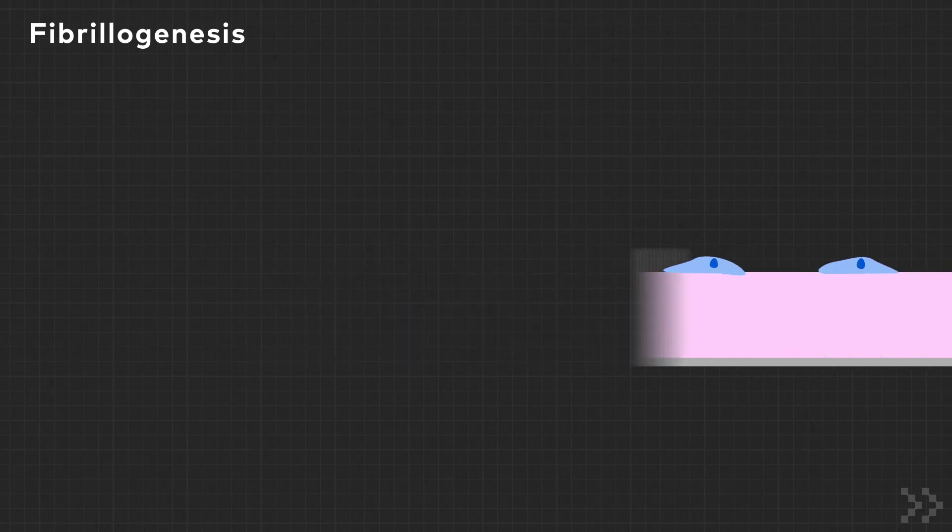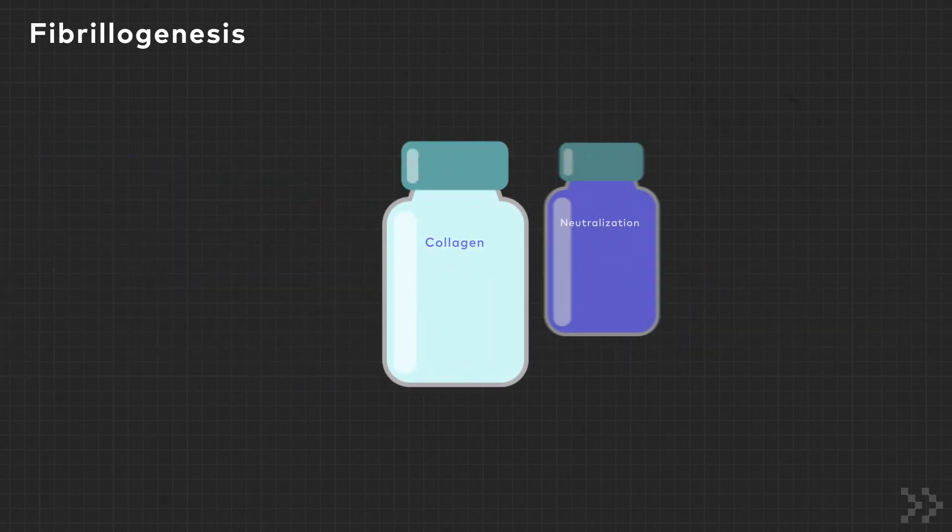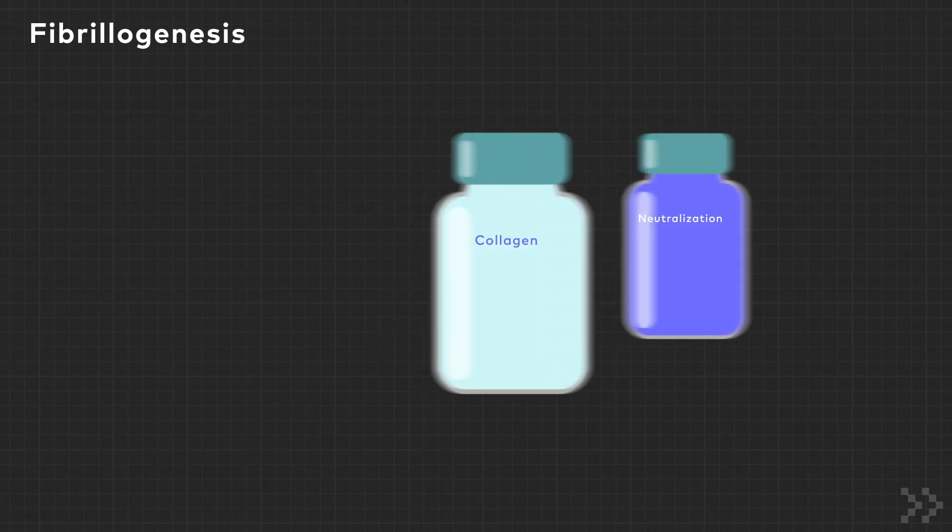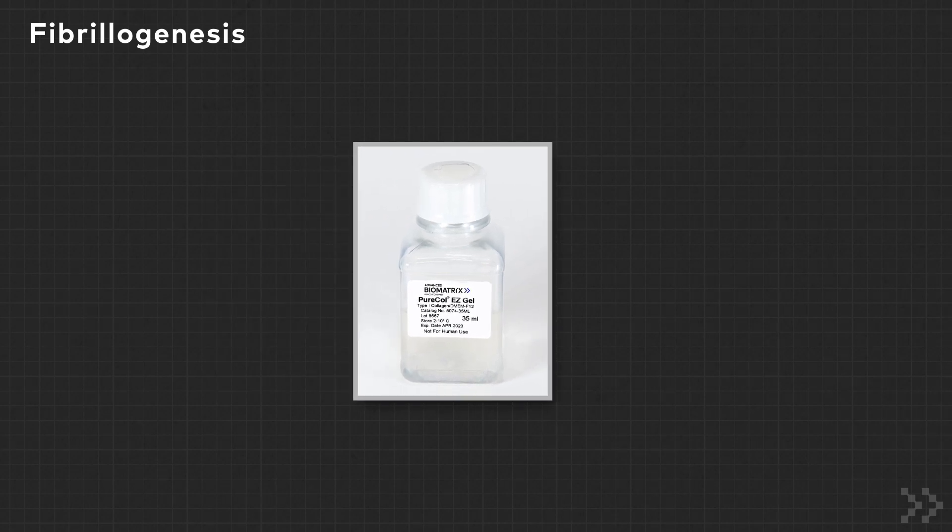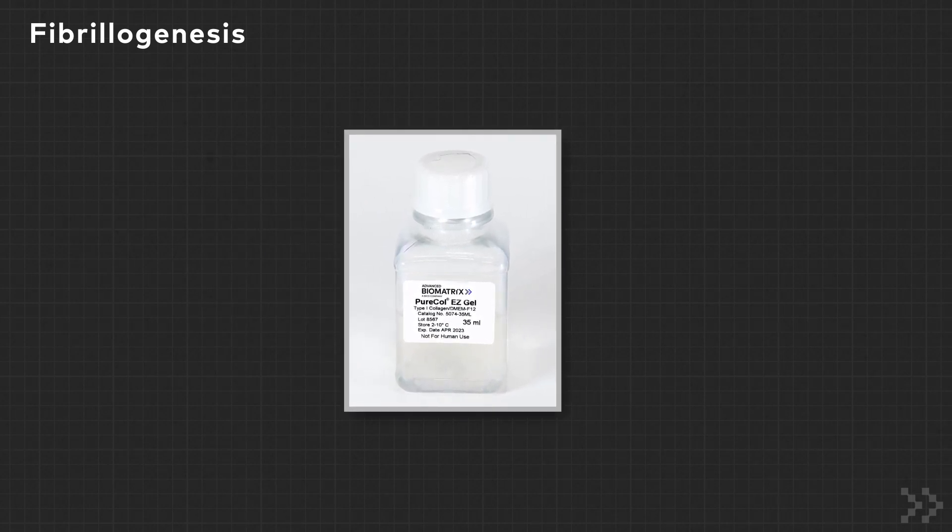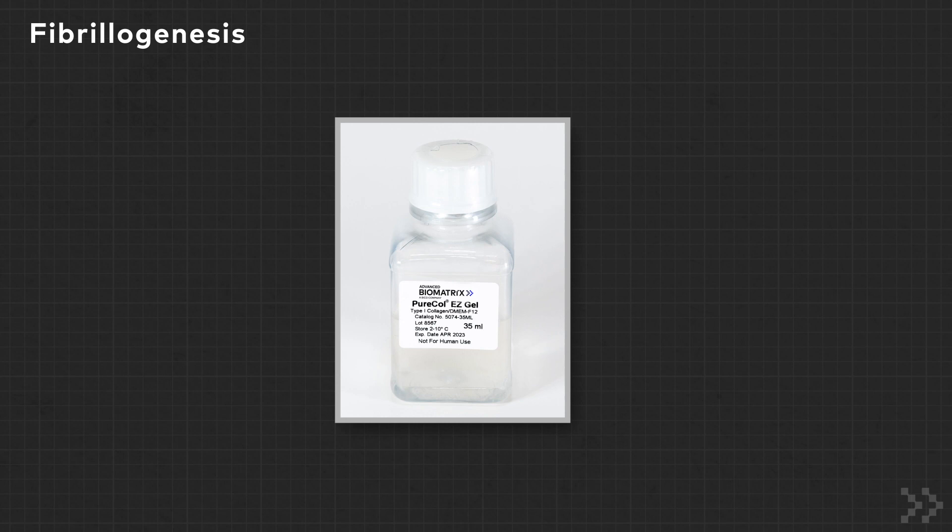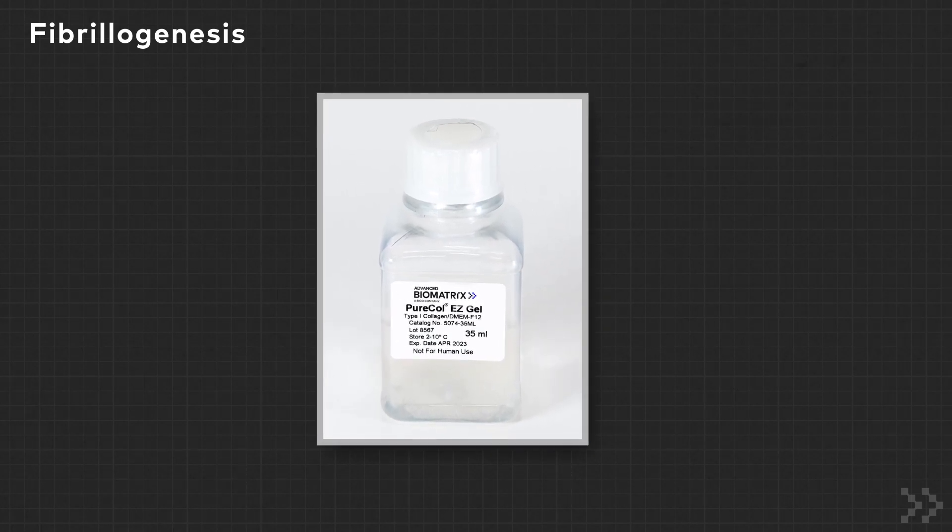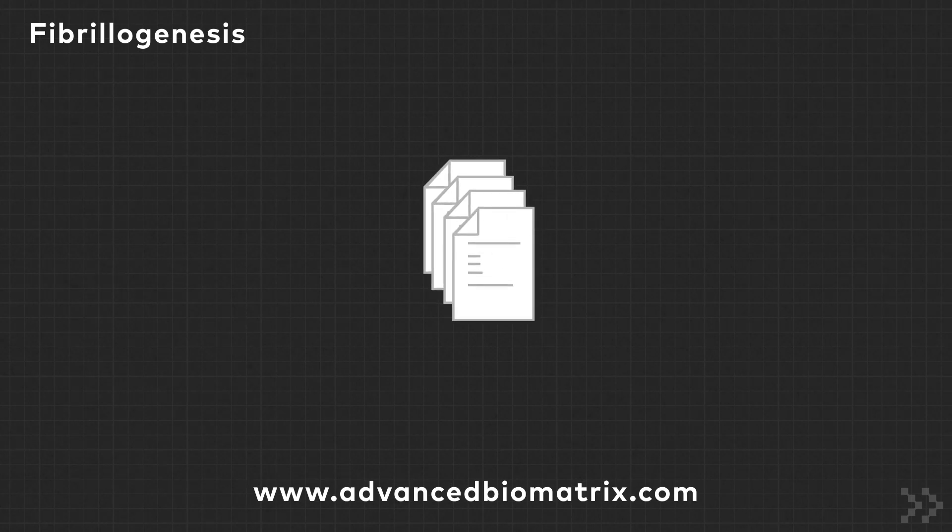Some products from Advanced Biomatrix come with a neutralization solution, making neutralization and salt addition a one-step process. PureCal Easy Gel is a 5 mg per milliliter pre-formulated collagen. All you do is incubate at 37 degrees Celsius and it will form a gel. Exact protocols for every product can be found online at advancedbiomatrix.com.